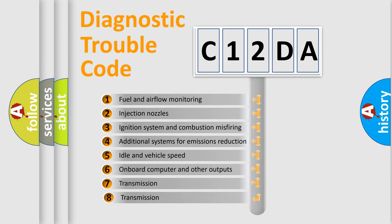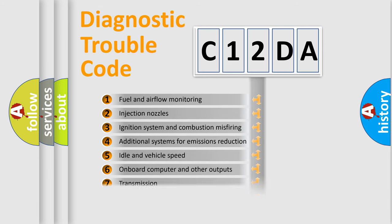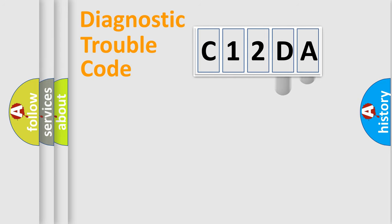The third character specifies a subset of errors. The distribution shown is valid only for the standardized DTC code. Only the last two characters define the specific fault of the group.